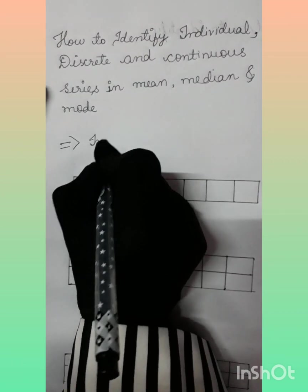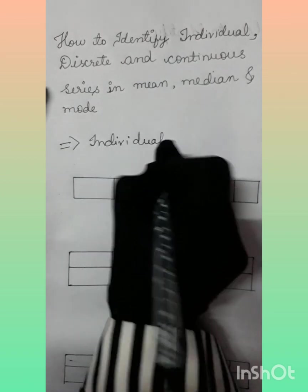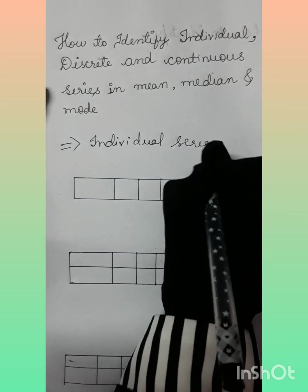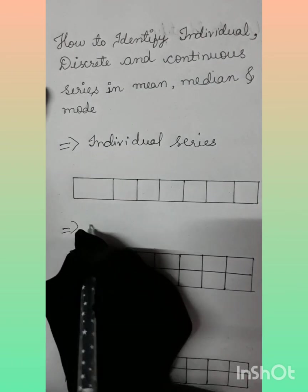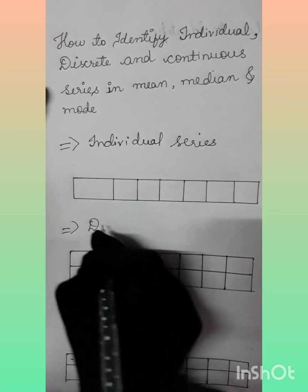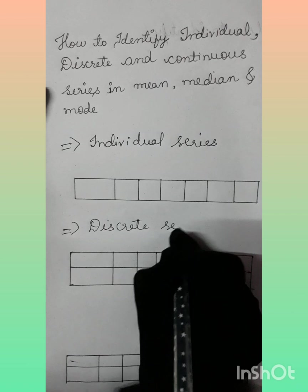To explain this clearly, I'm showing a few examples. A simple way to understand the series: if there is only one line in the question, then it will be an individual series.